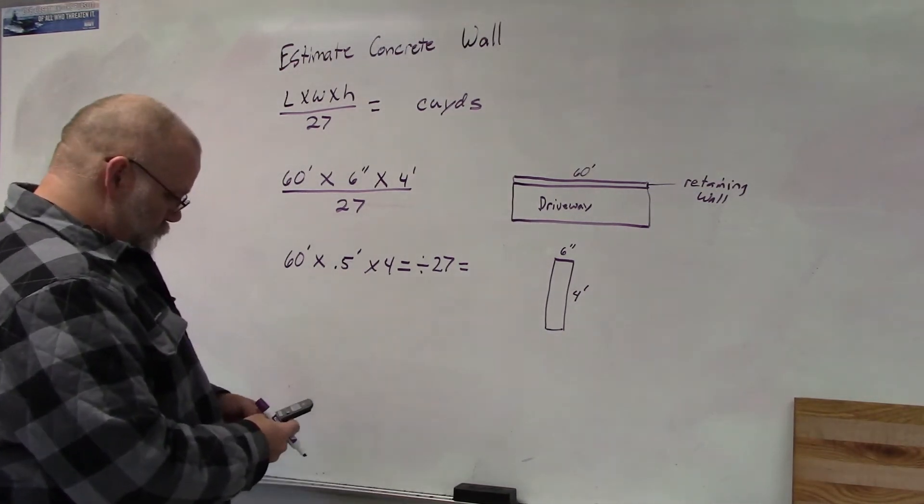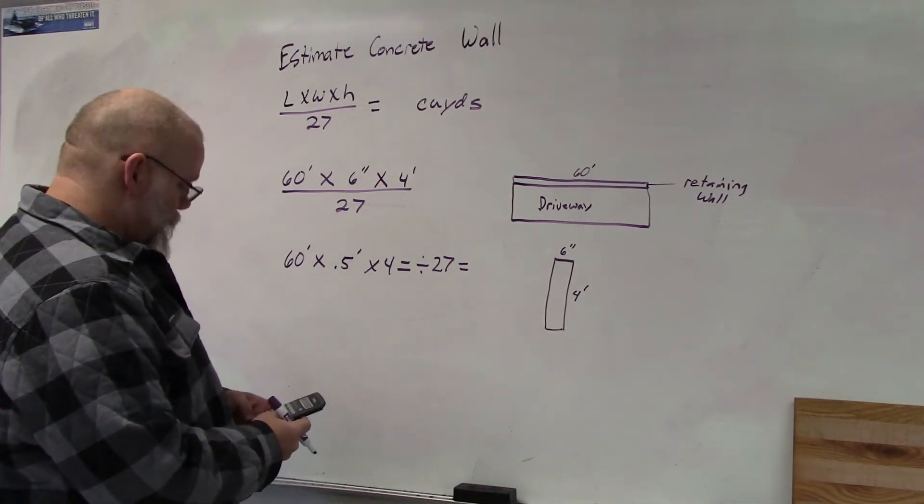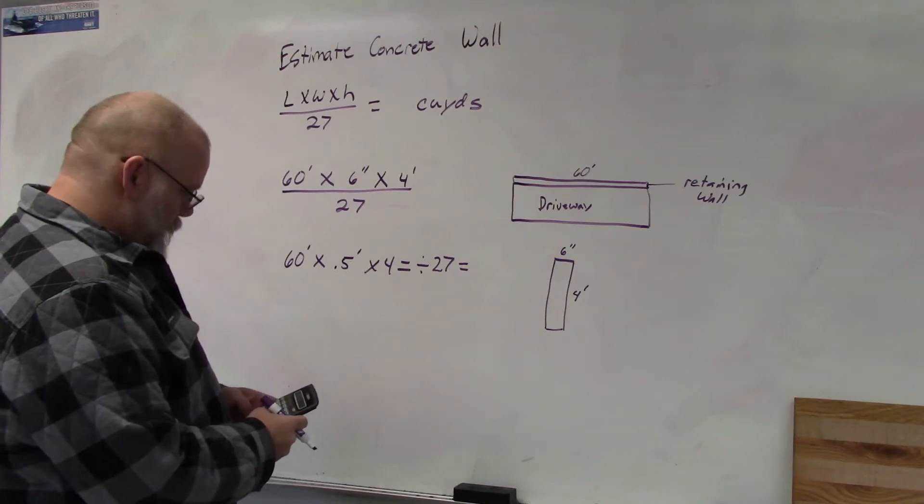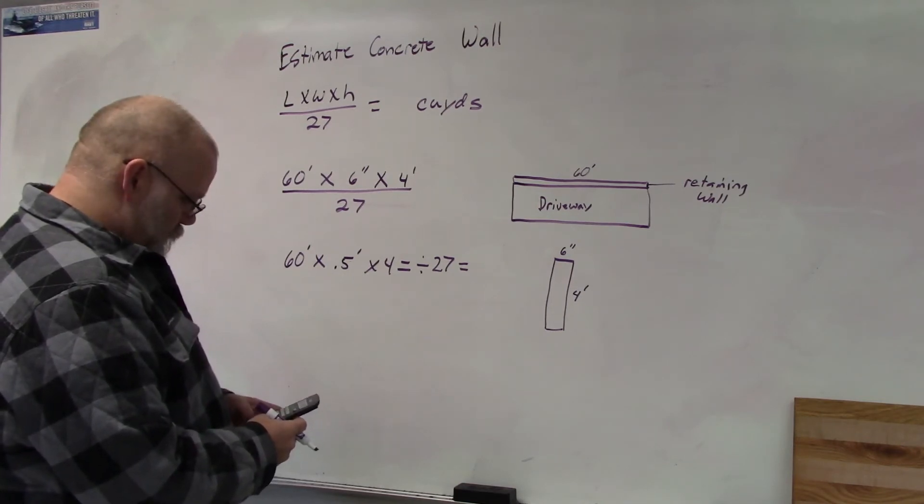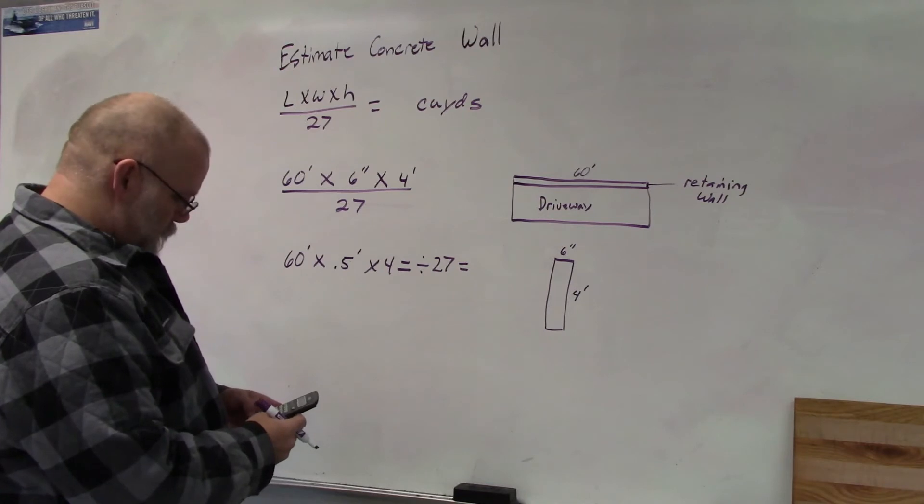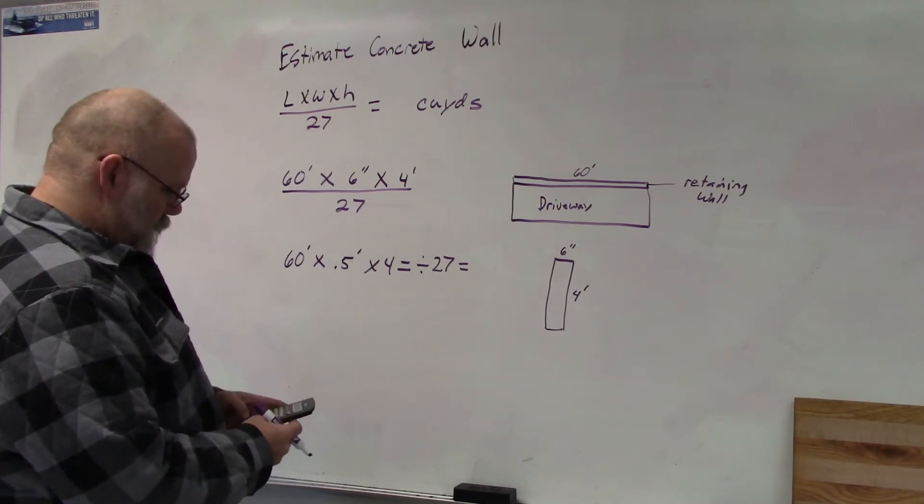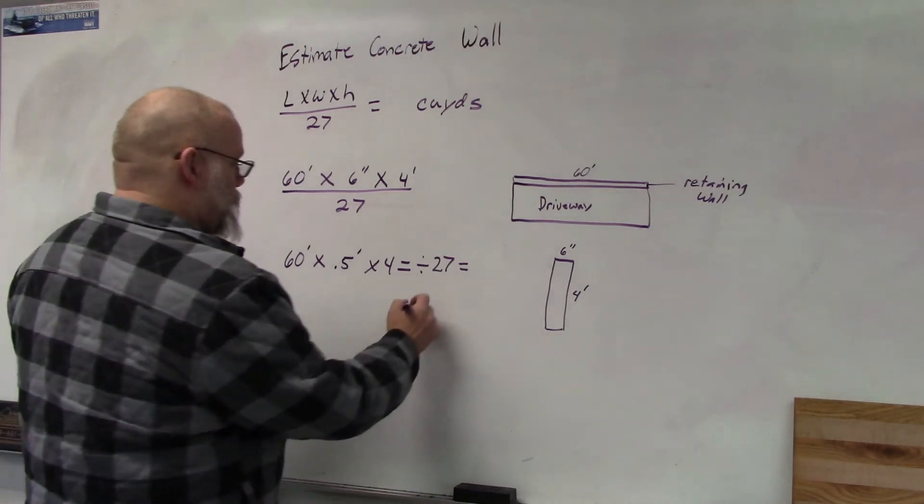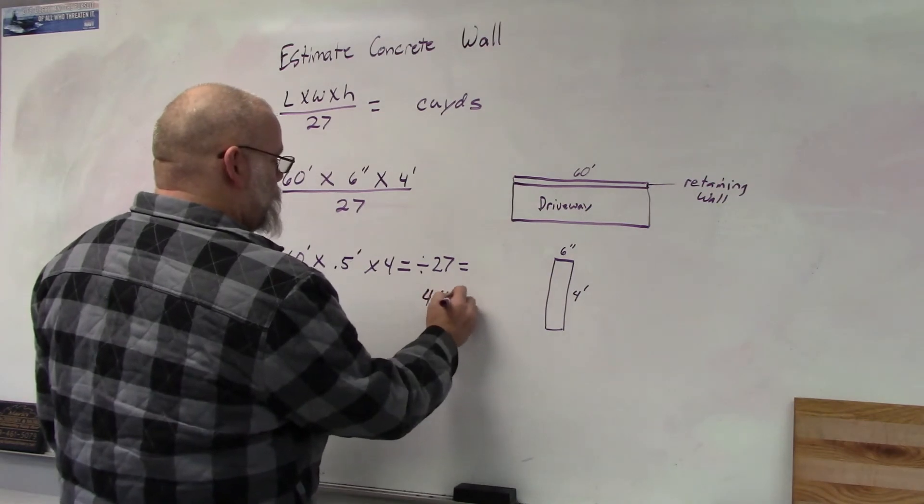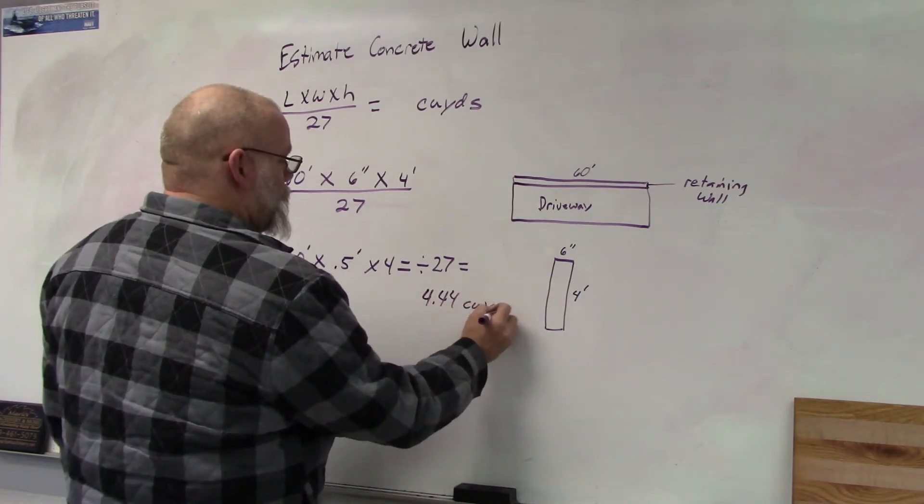So 60 times 0.5 times 4 equals divided by 27 equals. We get 4.44 cubic yards.